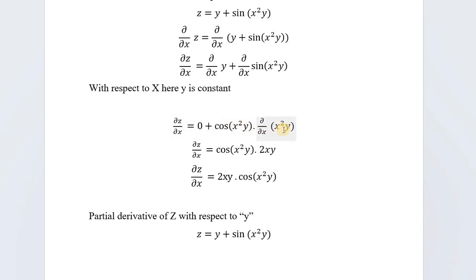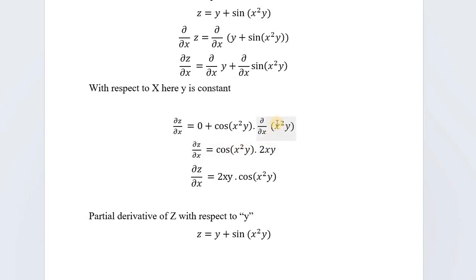After cos x, we again take the derivative of the inner function. The derivative of sin(x²y) gives cos(x²y), and then we differentiate x²y again. Since the variable has a power, the power comes down: the derivative of x²y with respect to x gives 2xy, and y remains as it is.